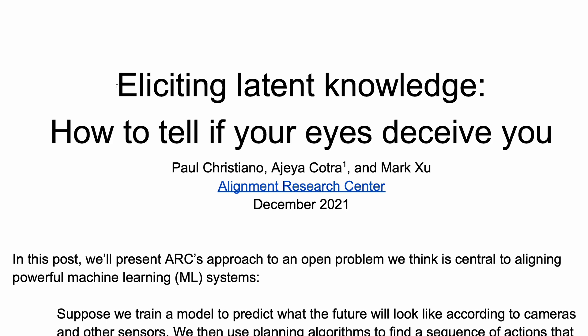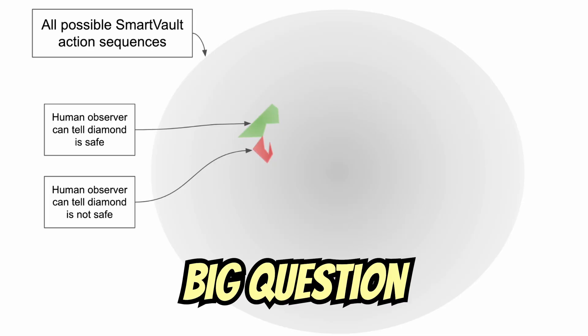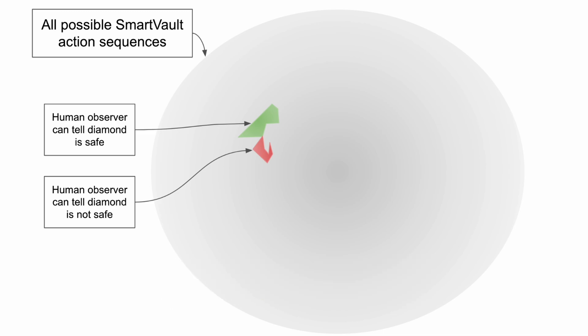This issue is closely related to the core challenge outlined in the eliciting latent knowledge proposal I discussed in a previous video. The big question here was about generalization. If we are only able to provide a supervisory signal for a small fraction of the actions that an advanced AI can take,